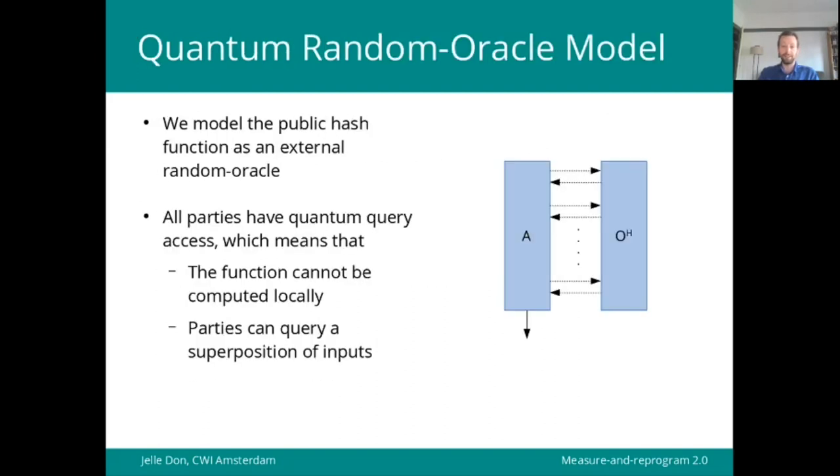I'll dive right in by explaining the quantum random oracle model. Proving security in the QROM means that we model the public hash function as an external random oracle to which all parties in the protocol have quantum query access. This means that the function cannot be computed locally, but all parties can query a superposition of inputs. This is a natural assumption since the hash function is assumed to be public, so anyone can build a quantum circuit to evaluate it, and then it's easy to evaluate on a superposition of inputs.